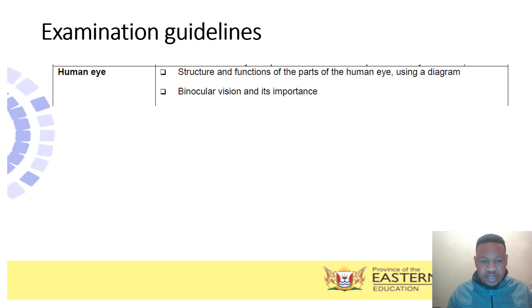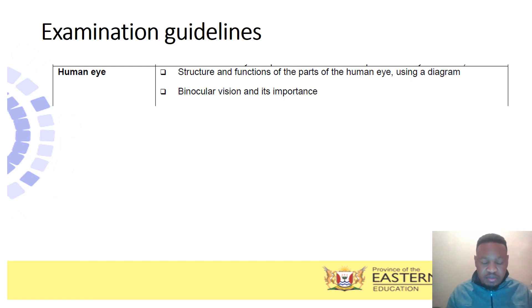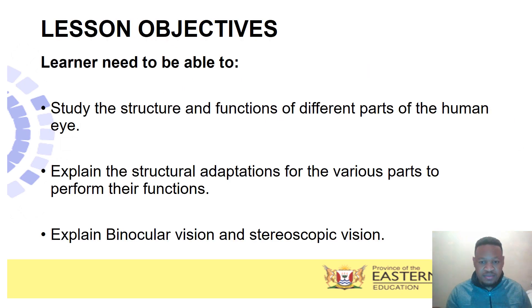Before we move any further, our examination guidelines tell us that on this part of the eye, you need to know the structure and function of the parts of the human eye using the diagram, and binocular vision and its importance.